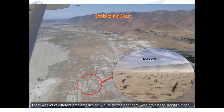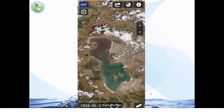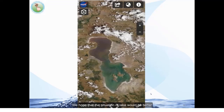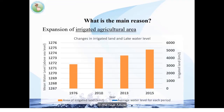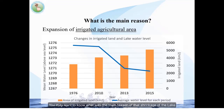There were many problems — for example, lots of dust storms and salty dust storms — and other projects were launched to stabilize those dust-prone areas. This shows the latest situation of the lake as of June 22nd. The main reason for the shrinkage was the increasing area of irrigated land, and at the same time you can see the corresponding decrease in the lake's water level.